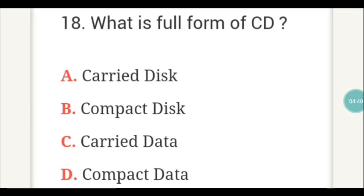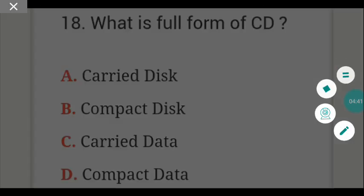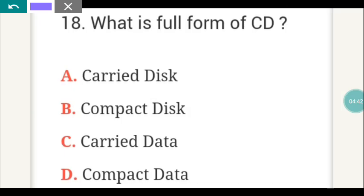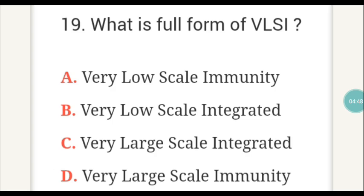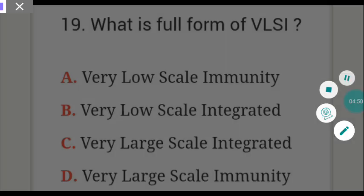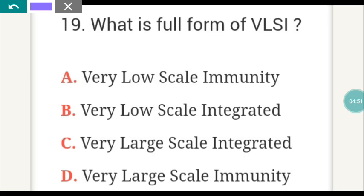What is the full form of CD? The answer is B — Compact Disc. The next question: what is the full form of VLSI? VLSI full form is C — Very Large Scale Integrated.